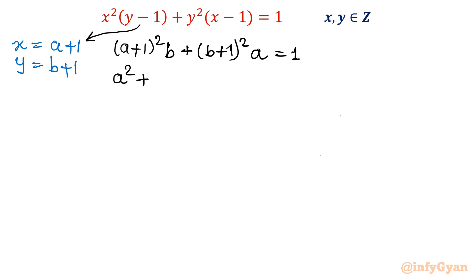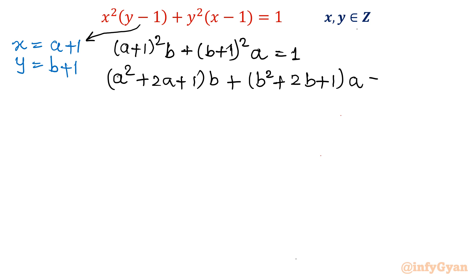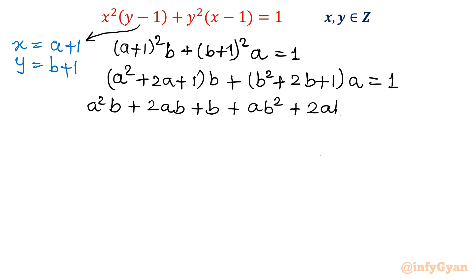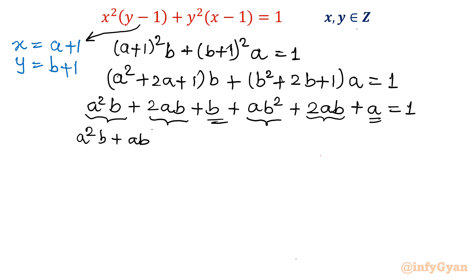Now let's expand using algebraic identities. I will write (a² + 2a + 1)·b plus (b² + 2b + 1)·a = 1. Expanding: a²b + 2ab + b + ab² + 2ab + a = 1. Now collect degree-wise terms. We get a²b + ab², then 2ab + 2ab which is 4ab, and finally a + b = 1.